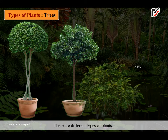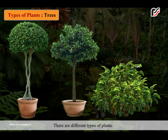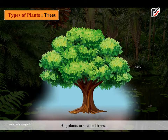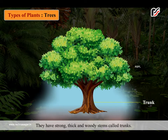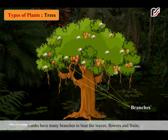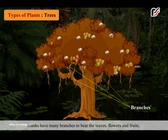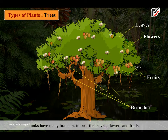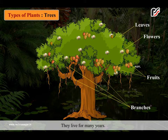There are different types of plants. Big plants are called trees. They have strong, thick and woody stems called trunks. They also have strong roots to hold them in the ground. Trunks have many branches to bear the leaves, flowers and fruits. They live for many years.